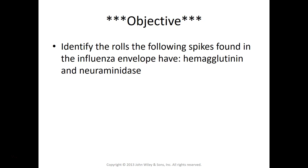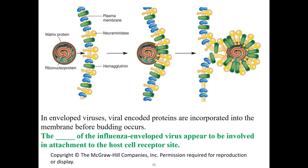Influenza has two important spikes in its envelope: hemagglutinin and neuraminidase. Neuraminidase — because it ends in '-ase' — is an enzyme. Hemagglutinin: 'heme' refers to blood, 'glutin' refers to clumping, so this protein actually causes your red blood cells to clump up. The virus packages its nucleocapsid, travels to the membrane where it has inserted neuraminidase and hemagglutinin — those two protein spikes — and then goes through the egress process to leave the cell and infect others.